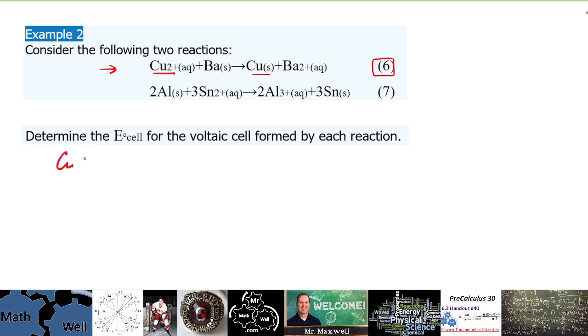Okay, so yeah, Cu2+ is gaining electrons so it's being reduced. Barium is going from solid to 2+ so it is losing electrons, oxidized. All right, so we have an idea of what's happening here.